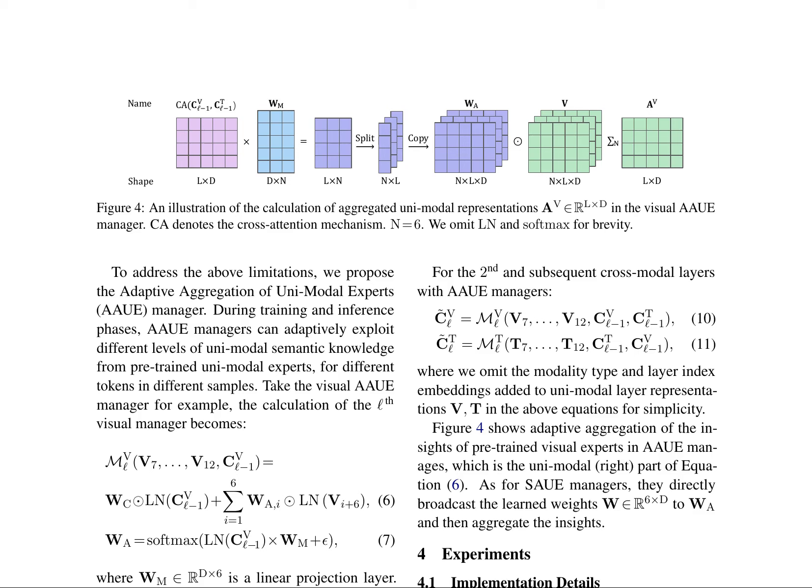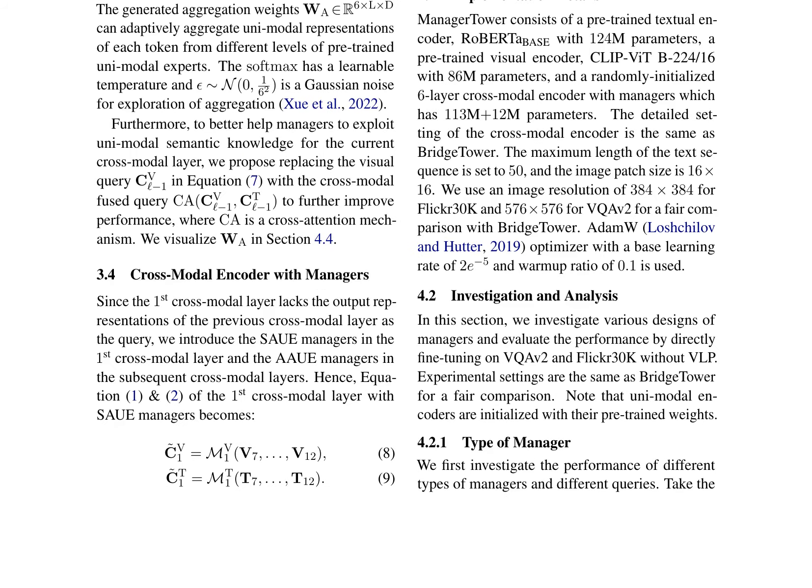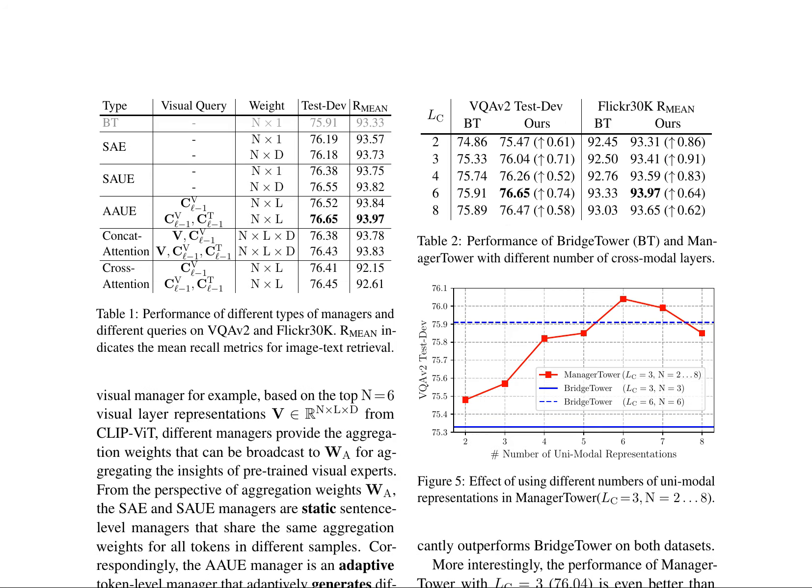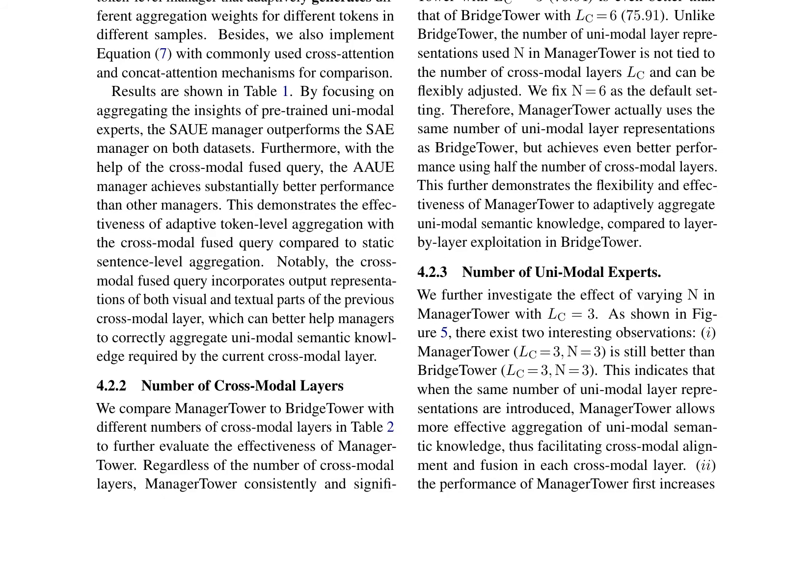The AAUE manager adaptively exploits different levels of unimodal semantic knowledge from pre-trained unimodal experts for different tokens in different samples. Its calculation involves cross-attention and softmax functions to generate adaptive aggregation weights, compared to static sentence-level managers and layer-by-layer exploitation in BridgeTower. Experimental results on VQA V2 and Flickr 30K show that the AAUE manager outperforms other managers, especially with the cross-modal fused query. Manager Tower consistently outperforms BridgeTower with different numbers of cross-modal layers, demonstrating flexibility and effectiveness.